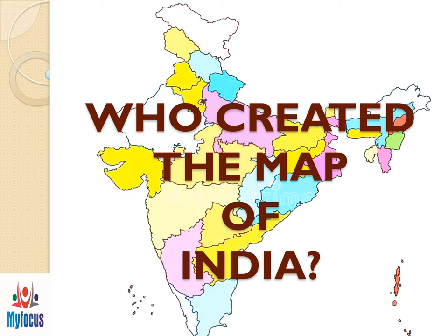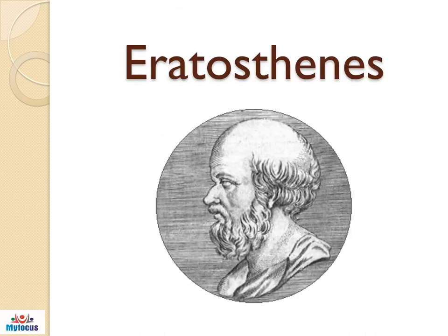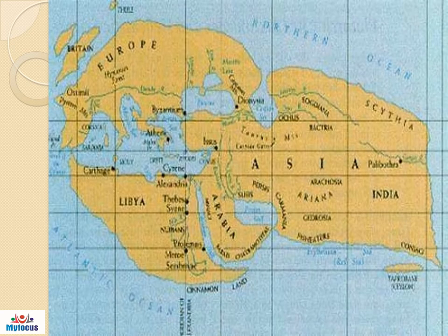The first one is Eratosthenes. The second one is Ptolemy. The third and fourth are William Lambton and George Everest, followed by James Rennell. In 300 BC, the ruler of Greece, Alexander the Great, ordered Greek mathematician Eratosthenes to prepare the map of India. The map prepared by Eratosthenes looks like this in the picture.